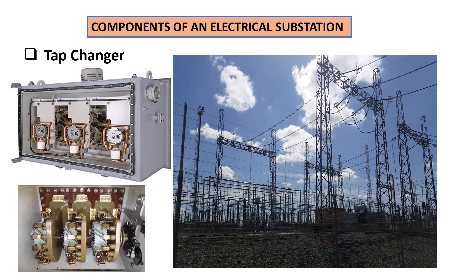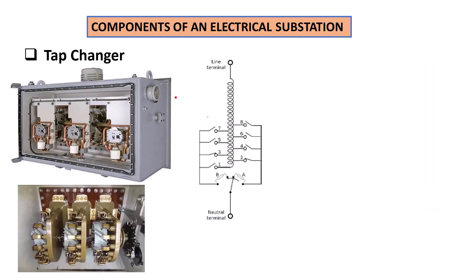You may have an important question on how this regulation is actually achieved. The principle is very simple: the adjustment is made on the turns ratio through this tapping, as you can see here. That's why it is called a tap changer.